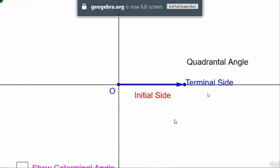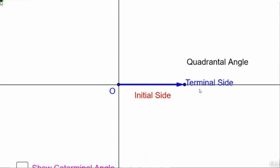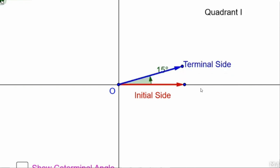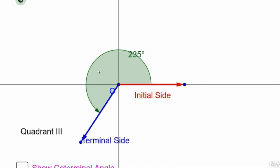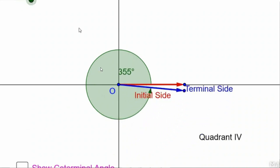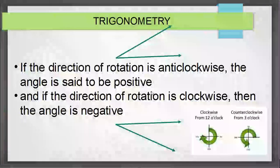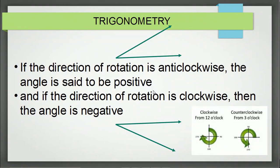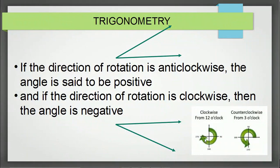Generally when you take the coordinate axis, the positive x-axis will be the initial line. If you rotate in the anti-clockwise direction, the angle is said to be positive. If the direction of rotation is clockwise — like the way the tip of a clock moves — then the angle is taken as negative.